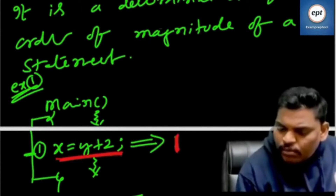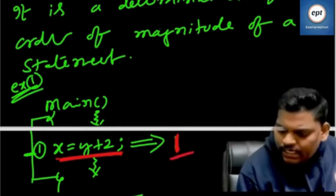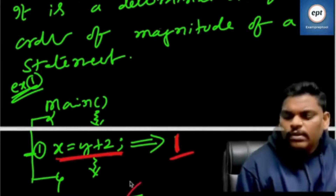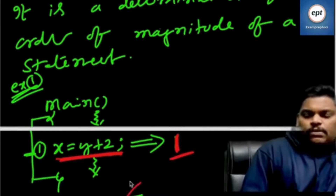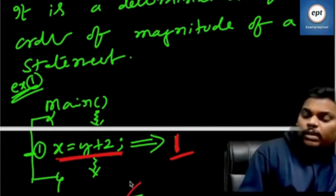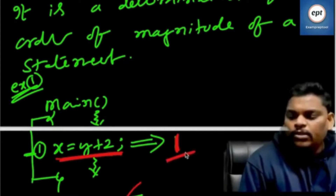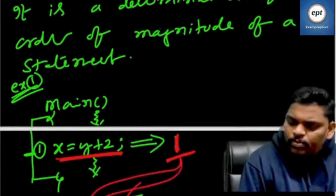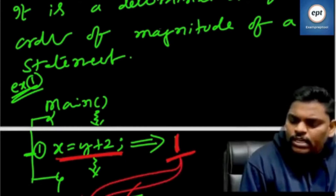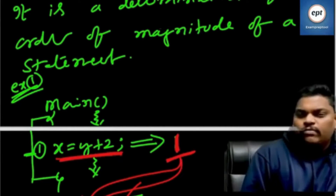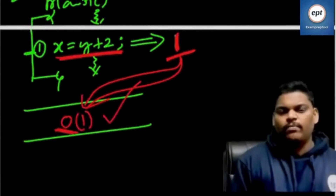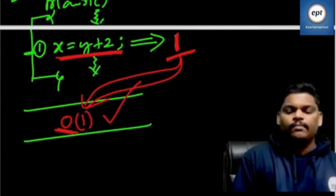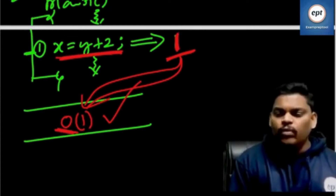Time complexity of this program: whatever order of magnitude there is — take it as is, and just keep capital O. Time complexity will be represented with capital O. Capital O of 1. That is the first program. The time complexity is O(1).